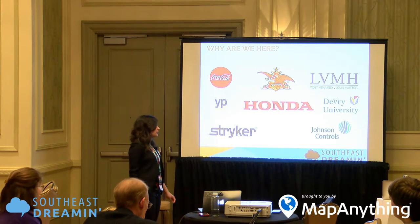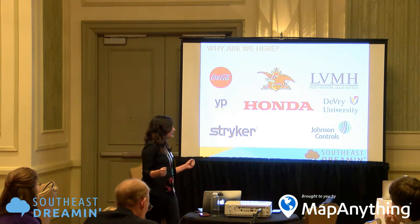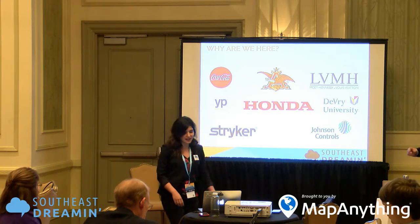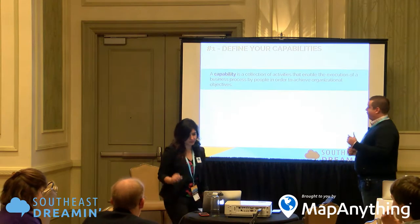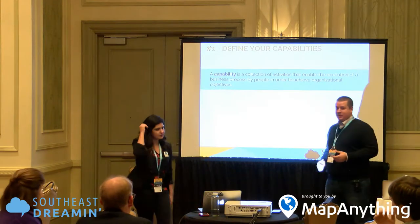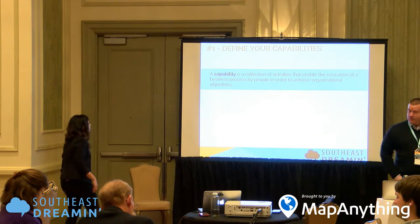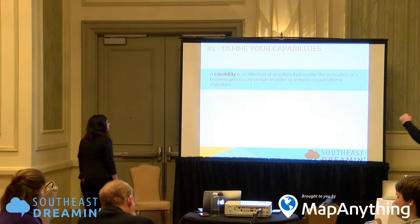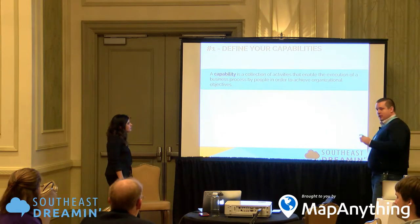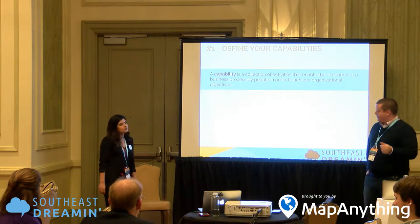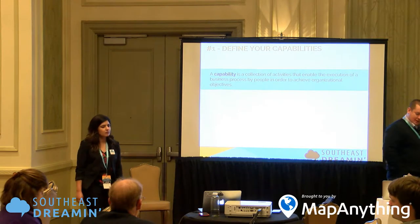Joe is going to take it away and start off with the first step. Step one: define your capabilities. By definition, a capability is a collection of activities that enable the execution of a business process by people in order to achieve business objectives.